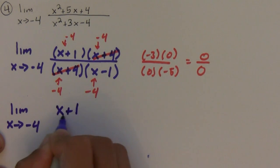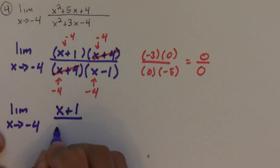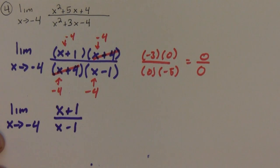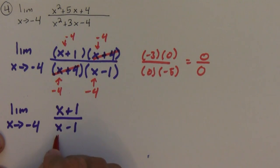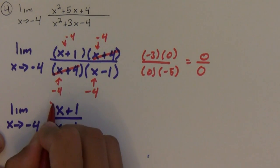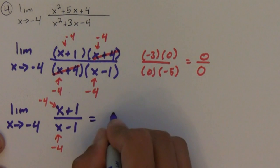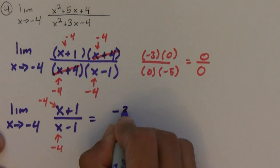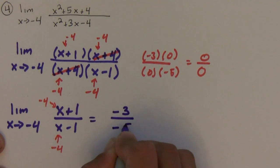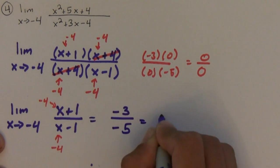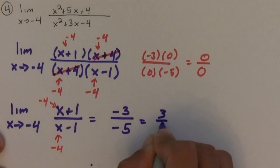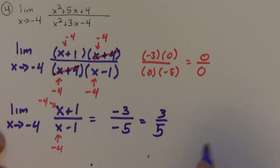After canceling, if I plug in negative 4 I would get negative 3 over negative 5, which is 3 over 5.